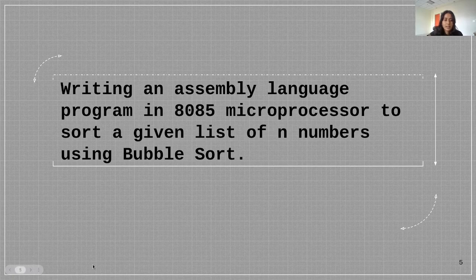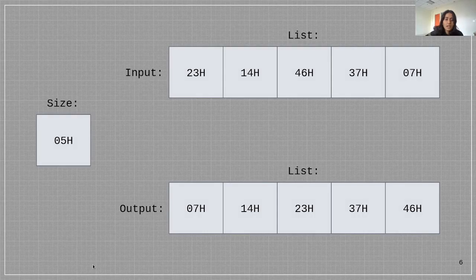Now we are going to write an assembly language program in 8085 microprocessor to sort a given list of n numbers using bubble sort. Here the size of our list is going to be 5.